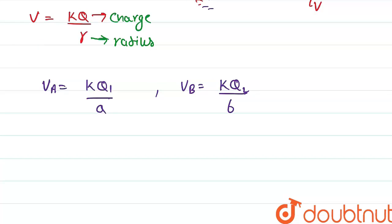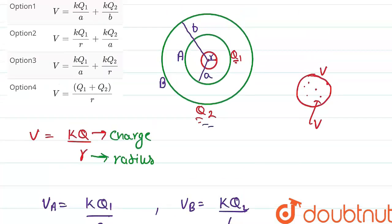Now, to calculate net potential, we will be using V net equals VA plus VB. Solving this, we will be getting kq1 upon a plus kq2 upon b. So, this is the net potential at distance r from the origin.